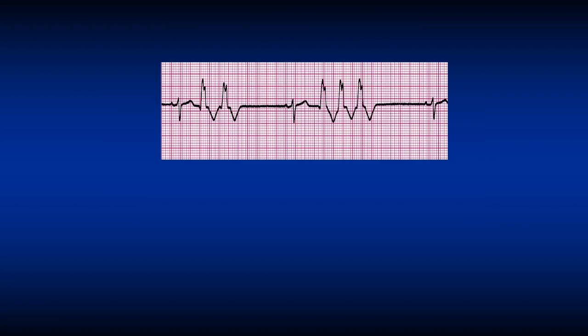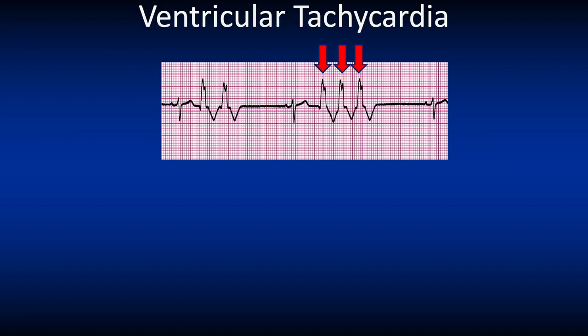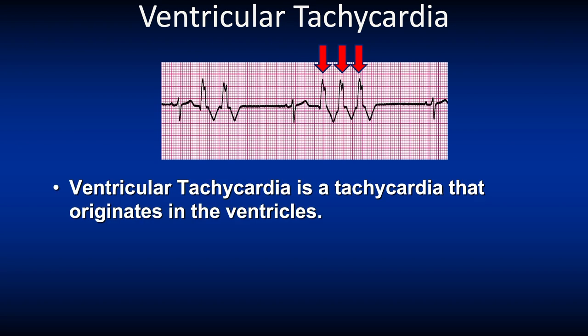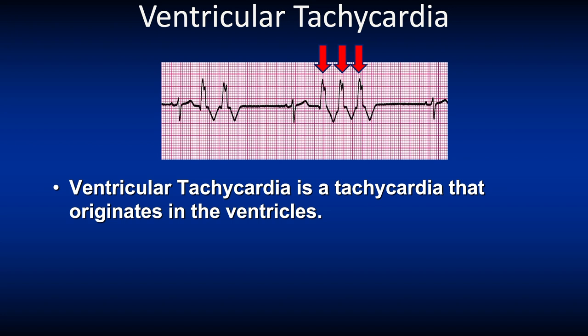Here we see three PVCs in a row — it's a ventricular tachycardia. Ventricular tachycardia is a tachycardia that originates inside the ventricles. It is defined as three or more consecutive PVCs in a row occurring at a rate of 150 to 250 beats per minute. This is called a run of VT.